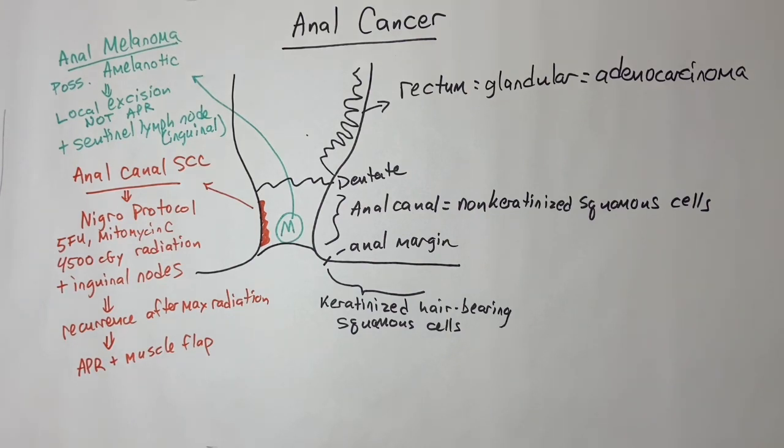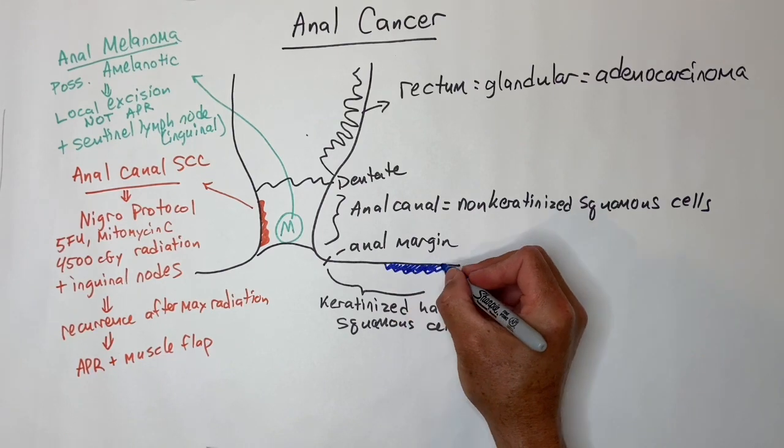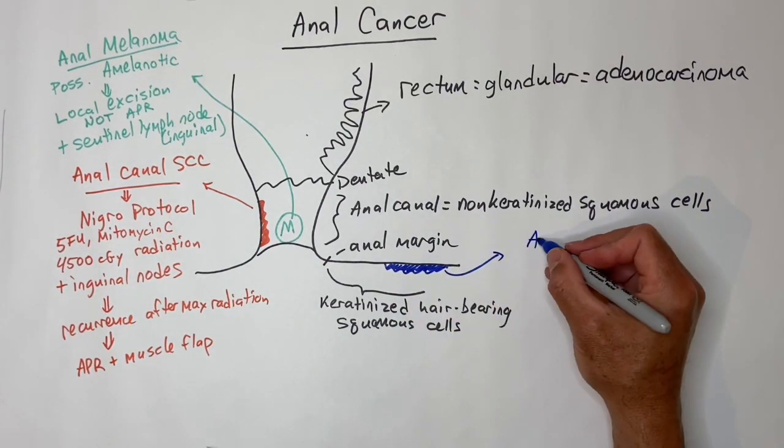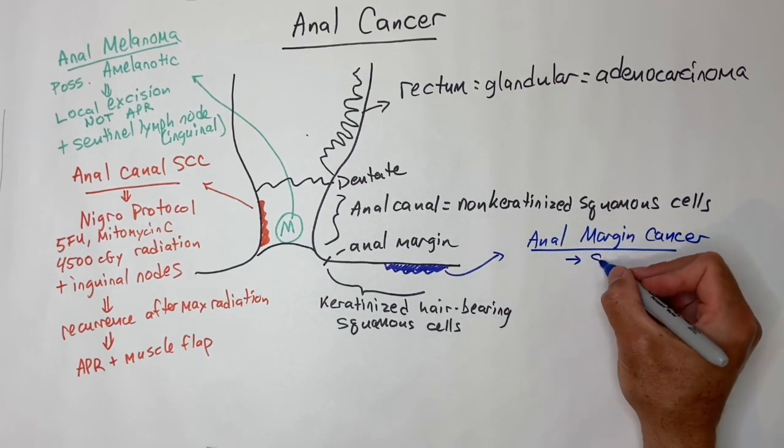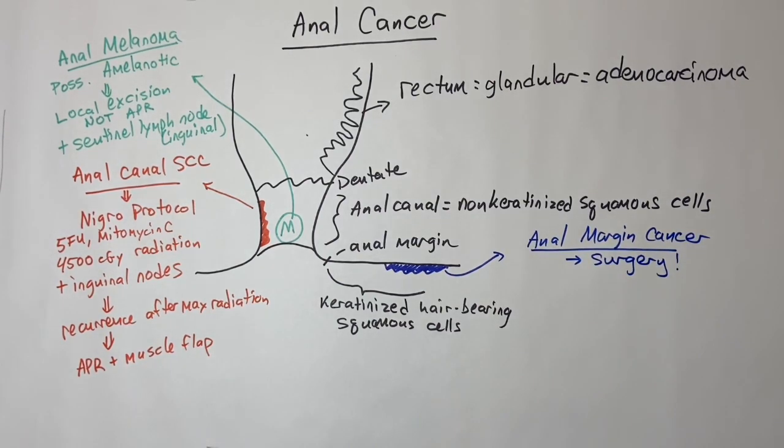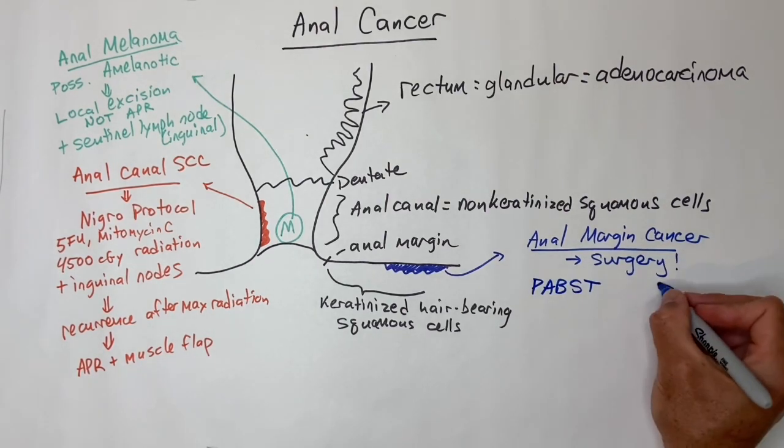Anal margin cancer is basically outside of the anal canal. Instead of chemoradiation, it is usually treated with surgical excision. If it is too big for surgery or recurs, then chemoradiation could be good for anal margin squamous cell carcinoma.